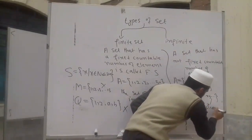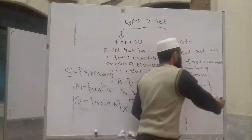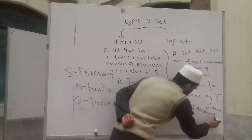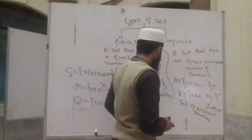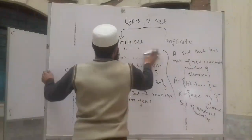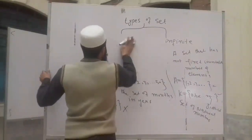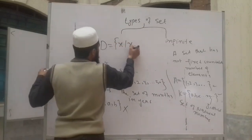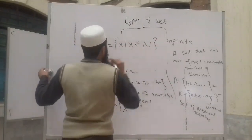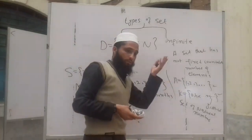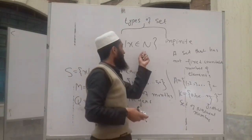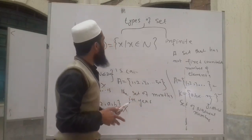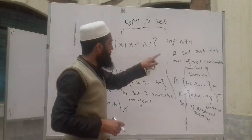The infinite set will be the set of natural numbers. For example, X such that X belongs to the natural numbers. The natural number is infinite — the last element is infinite. We always have to know whether the natural number is finite or infinite. The natural number is important to understand.